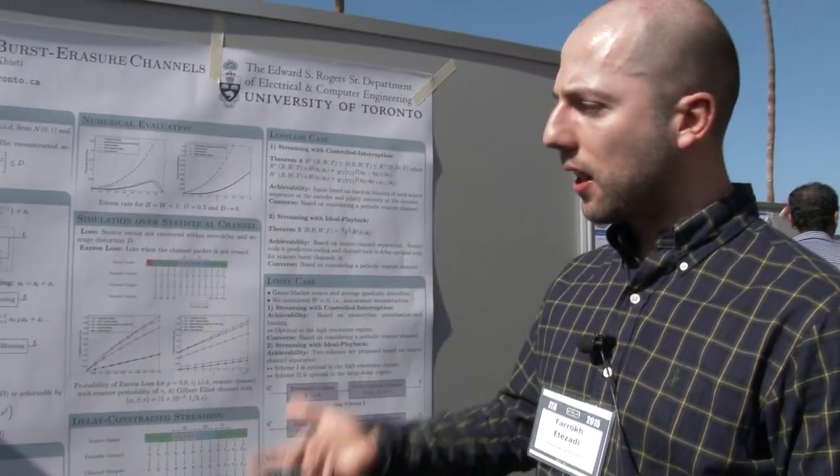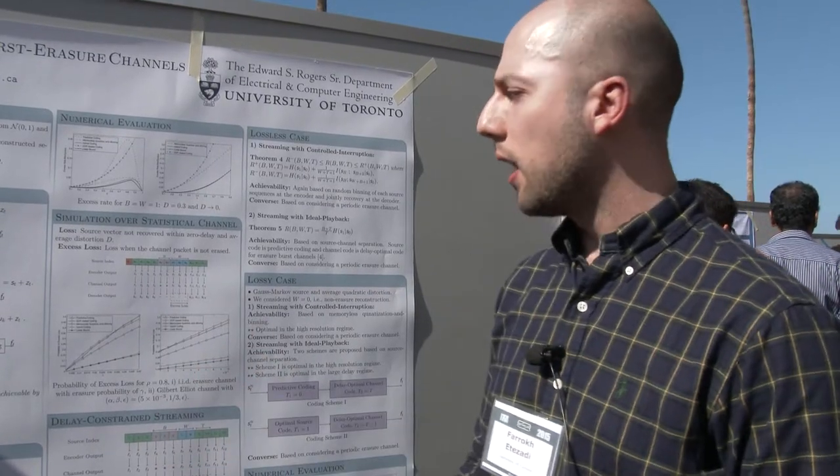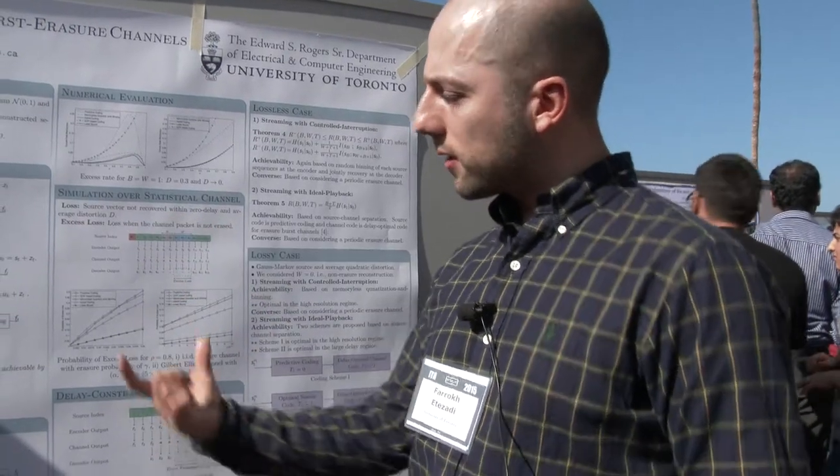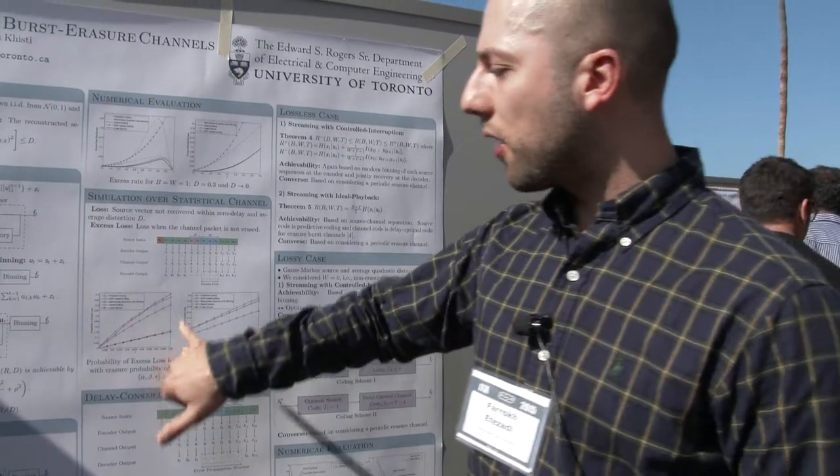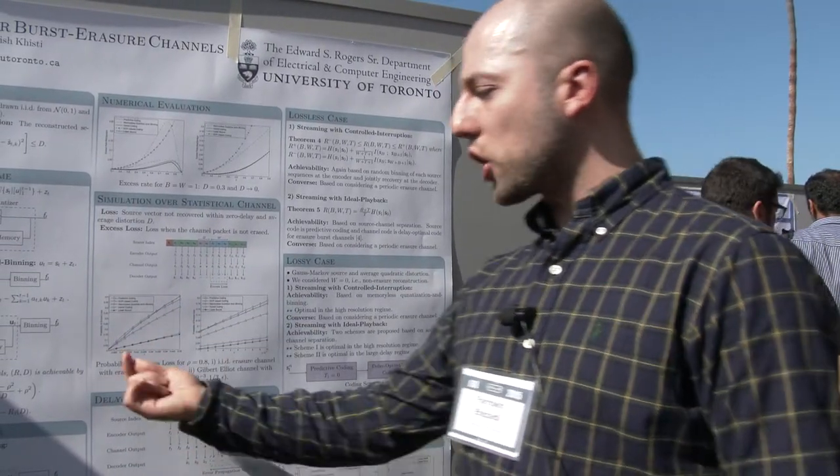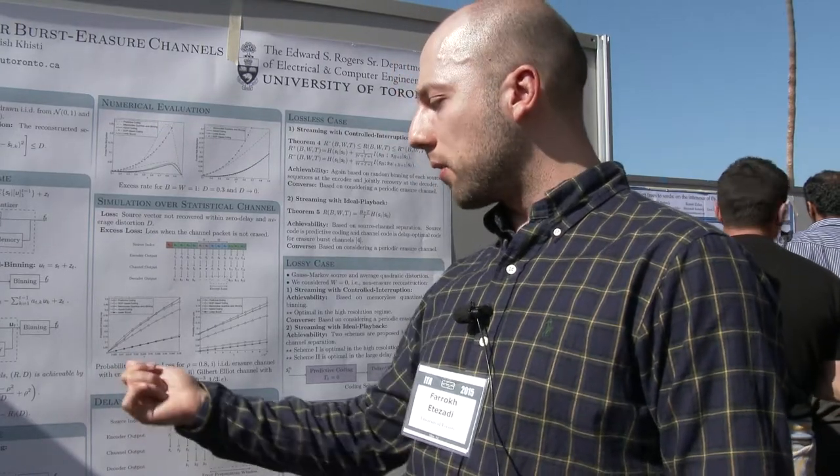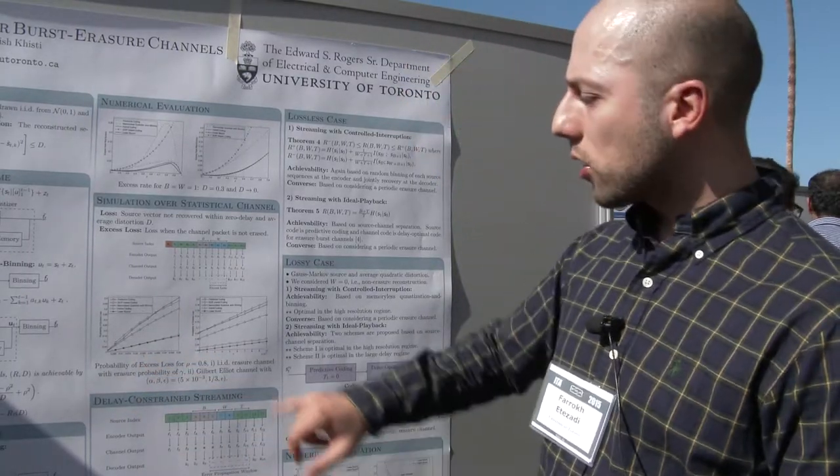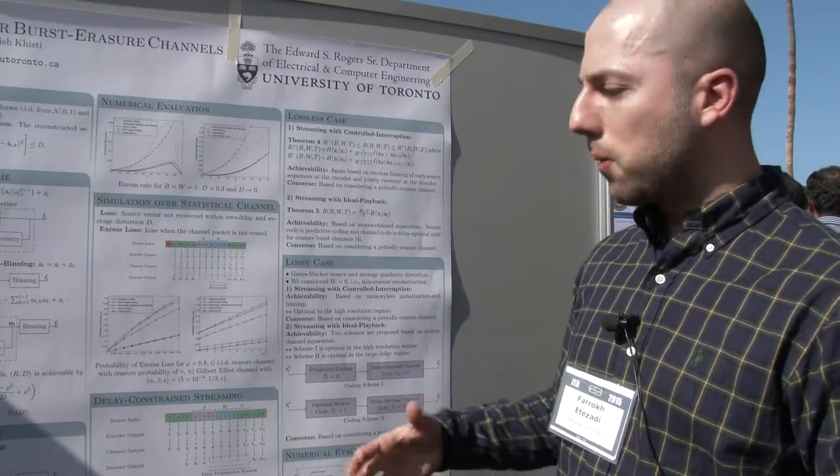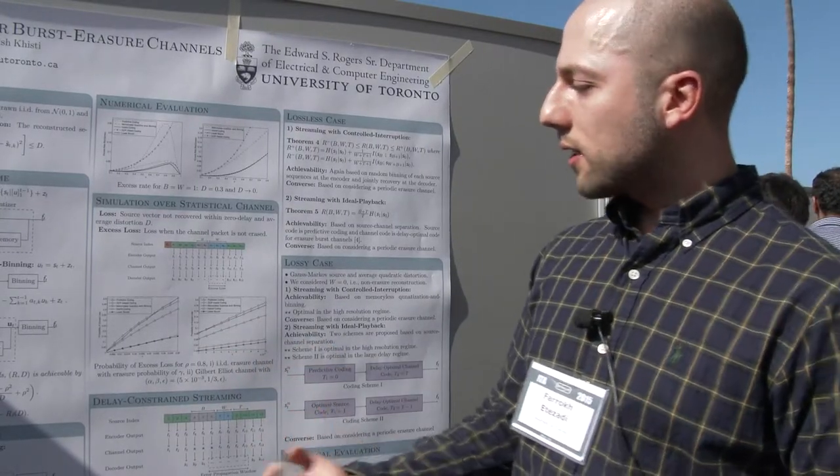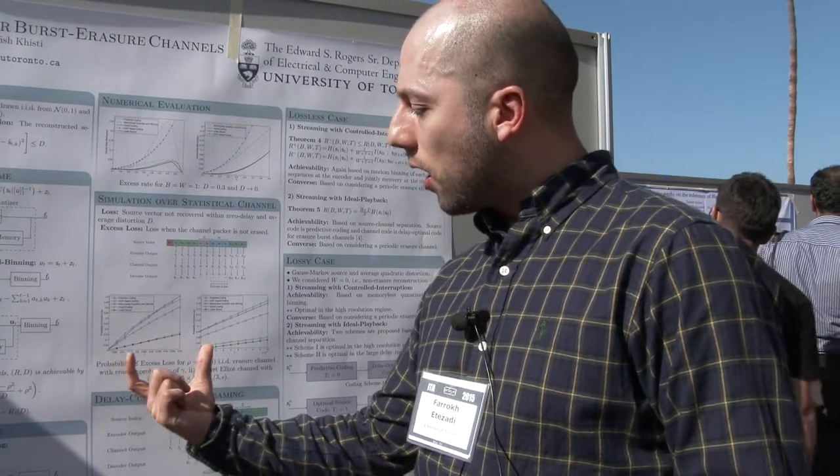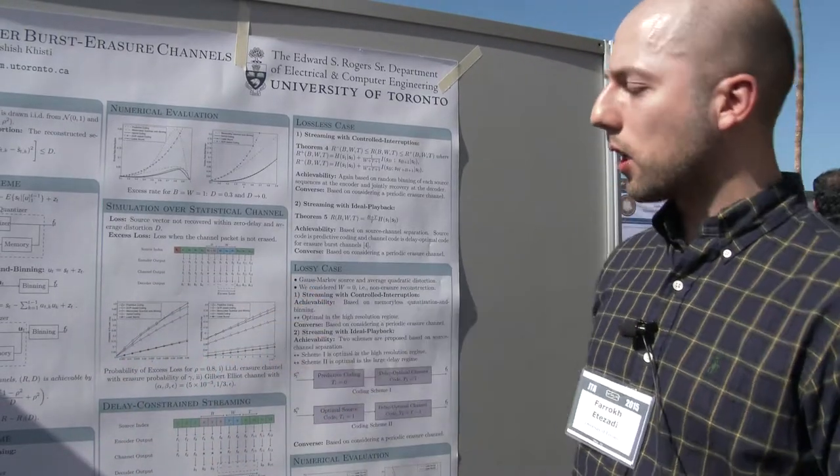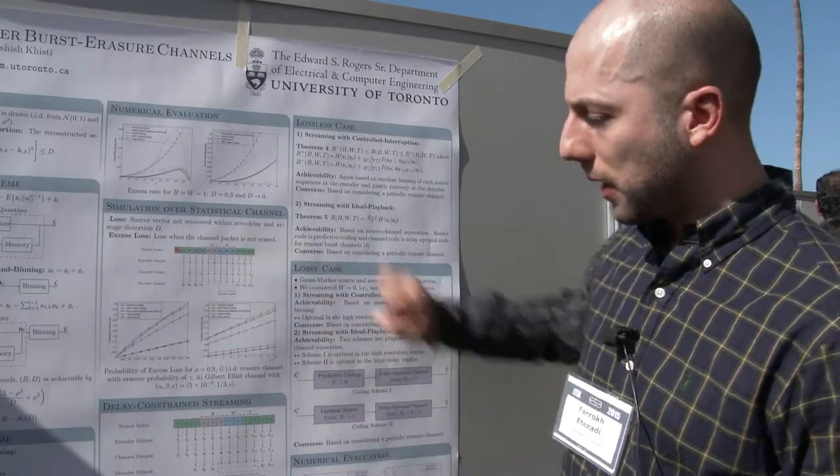Here are some simulations for simulating this hybrid coding scheme over the statistical channel model. For example, here we have an IID erasure channel, where the channel erases the packets with probability gamma and reveals the rest of the packets. And also here we can see another burst erasure channel model, which is a Gilbert-Elliott channel model. We can see that for this setup, at least, the hybrid coding scheme attains very close to the lower bound that we have for this problem. And also for the Gilbert-Elliott channel, we are very much better than the baseline scheme that's shown here.